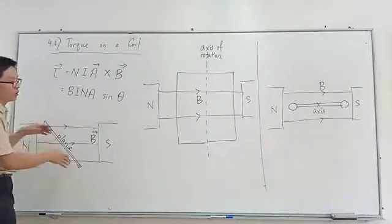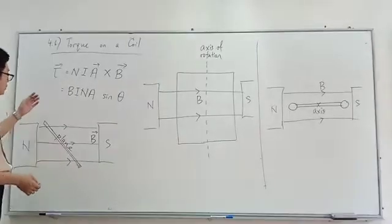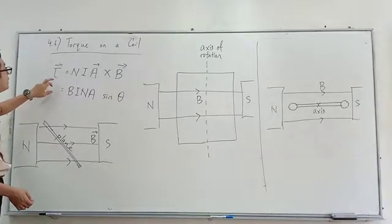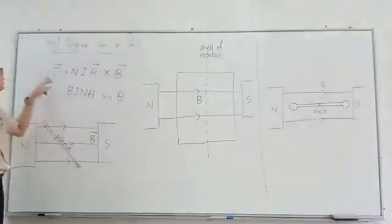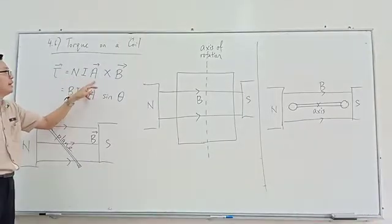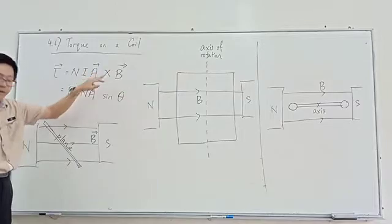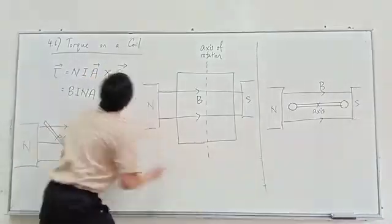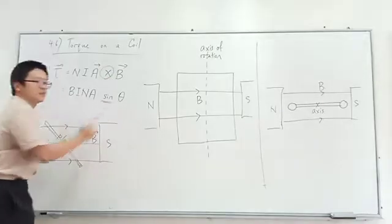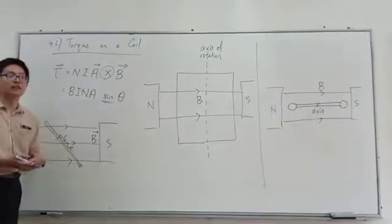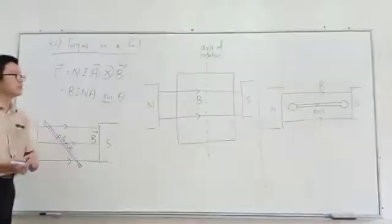So here we have a coil. To find the torque on the coil, the formula is: torque equals NiA cross B. It's a cross product. That's why we also use sine theta. In a dot product we use cos theta; in a cross product we use sine theta.